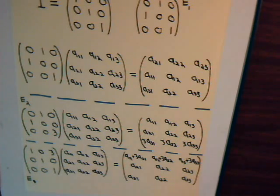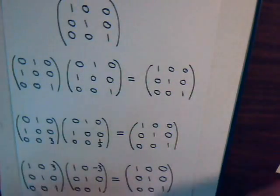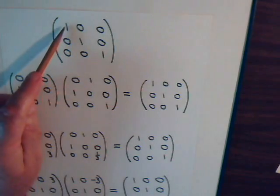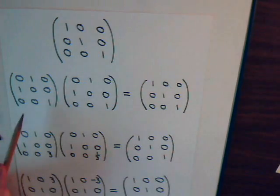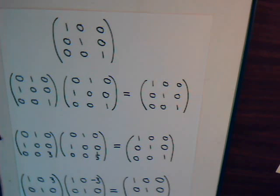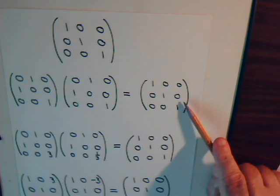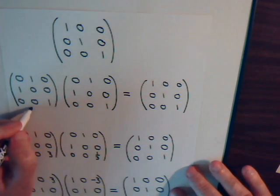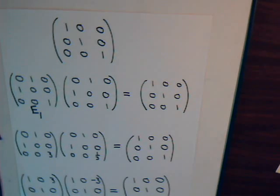Another property of elementary matrices: here is the identity matrix and the type 1 elementary matrix where we interchanged the first two rows. What happens if we multiply this matrix by itself? It interchanges the first and second rows again, bringing us back to the identity matrix. So for a type 1 elementary matrix, multiplying it by itself gives the identity matrix — meaning a type 1 elementary matrix is its own inverse.